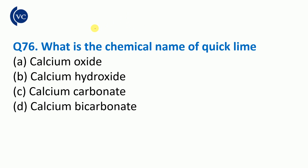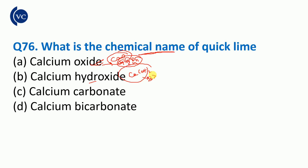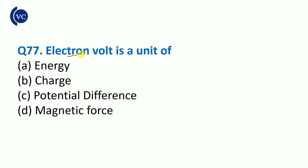Question number 76: What is the chemical name of quick lime? CaO is called quick lime. Calcium hydroxide is Ca(OH)2. This is called calcium carbonate, CaCO3, which is also known as marble.